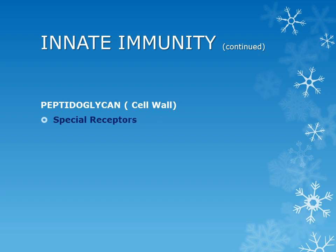The next important example of pattern recognition is peptidoglycan or cell wall. This peptidoglycan is recognized by a special type of receptor called the NOD receptor. As already pointed out, this NOD receptor is present in the cytoplasm of various immune cells like dendritic cells and macrophages, as they are important in providing immunity against intracellular bacteria.